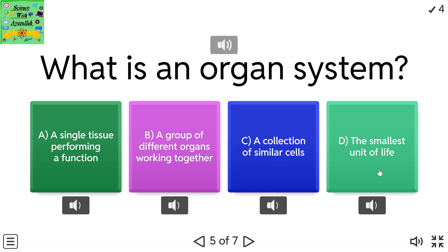What is an organ system? A: a single tissue performing a function. B: a group of different organs working together. C: a collection of similar cells. D: the smallest unit of life.